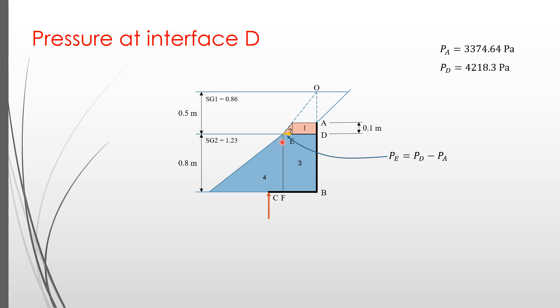The pressure representing the base of the triangle 2 can be obtained by subtracting PD by PA. It gives PE equals 843.66 Pascal.